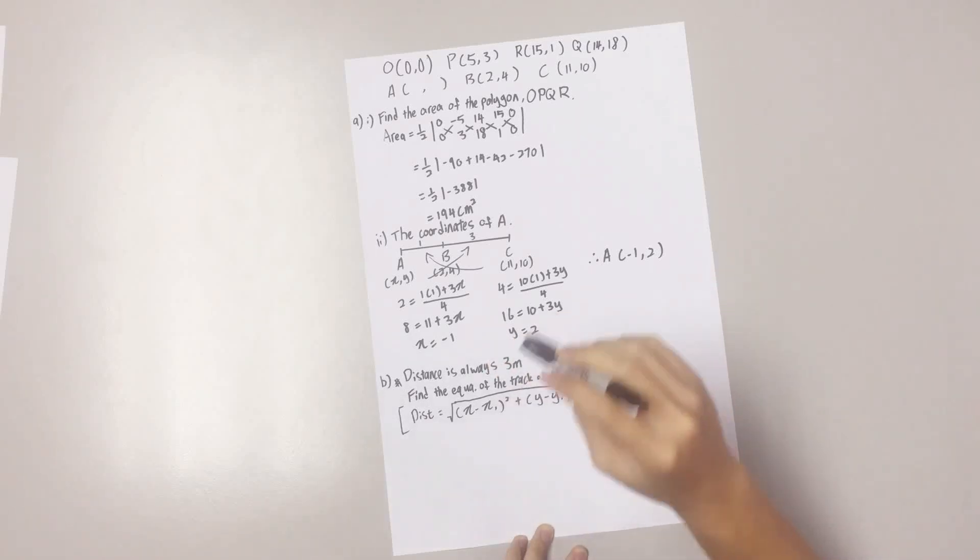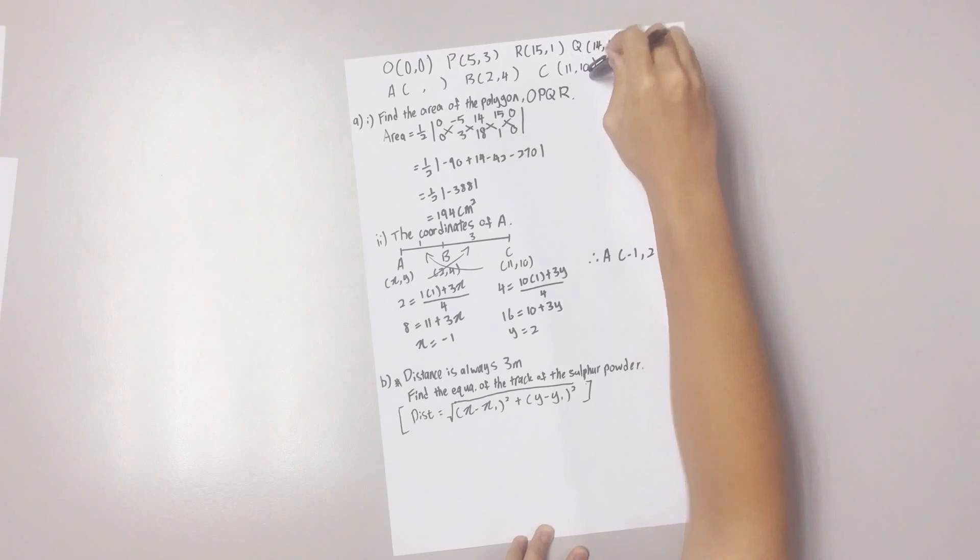So, you sub your distance, 3 meters, into the formula and you also sub the coordinates of point C into the formula.